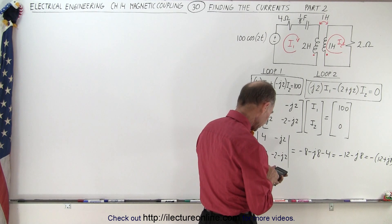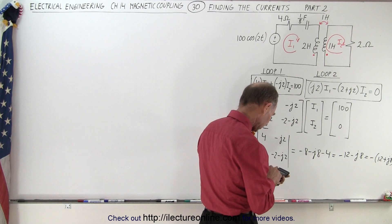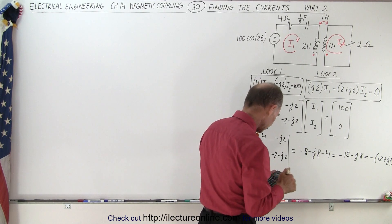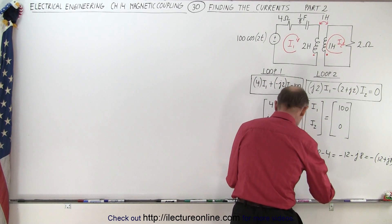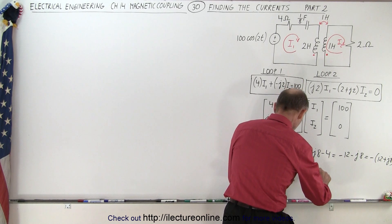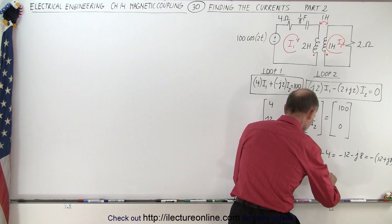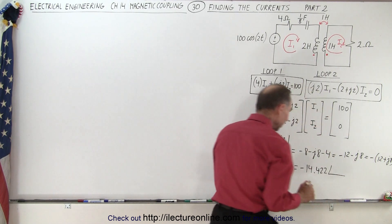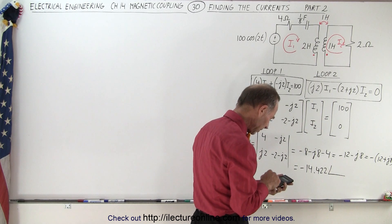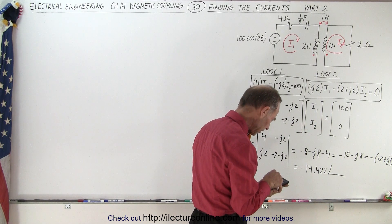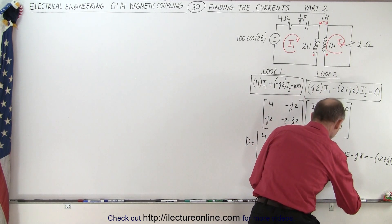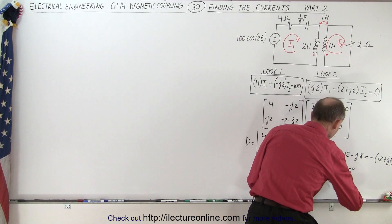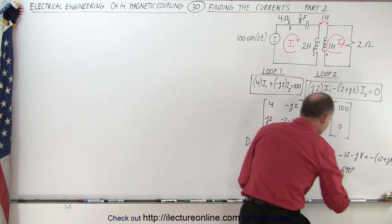So we end up with 144 plus 64, take the square root. That will give me equal to minus 14.422 with a phase angle of 8 divided by 12. Take the inverse tangent of that, which is 33.690 degrees.